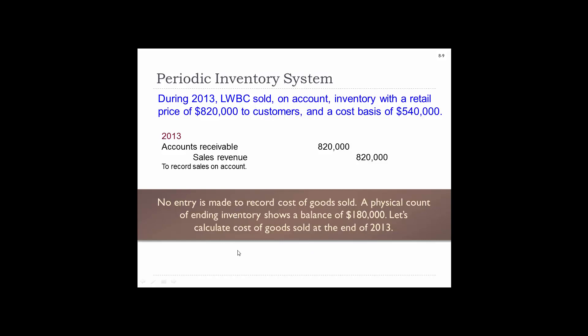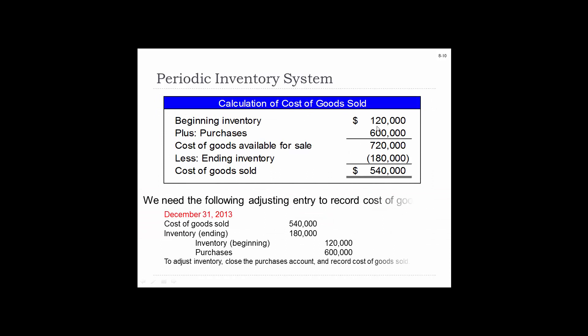So let's calculate cost of goods sold — we only make this adjustment at the end of the year. Beginning inventory plus purchases equals $720,000 cost of goods available for sale. Subtract out the $180,000 remaining and we get cost of goods sold of $540,000. We make the following adjustment on December 31st: debit cost of goods sold, debit inventory for the ending amount, credit inventory for the beginning balance, and credit purchases $600,000.